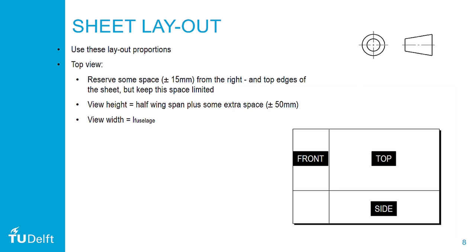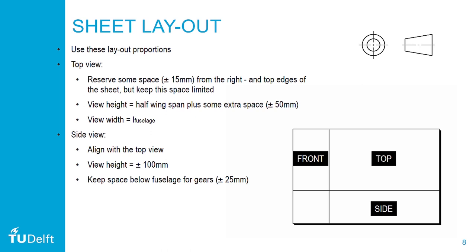For the top view, reserve some space from the right and top edges for about 50mm, but keep the space limited. The view height will be half the wingspan plus some extra space, coarsely 50mm. The view width is determined by the length of the fuselage. For the side view, you should align it with the top view, so the view width is identical to the top view. The view height is about 100mm, and make sure to keep some space below the fuselage for the gears — approximately 25mm.